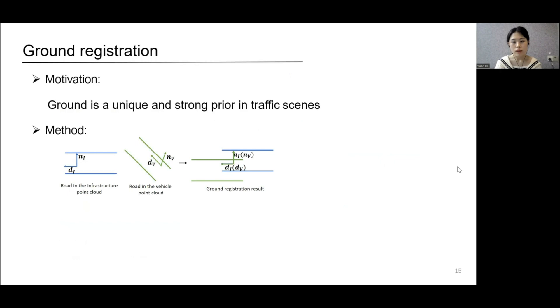Ground is a unique and strong prior in traffic scenes. By exploiting the ground, we can obtain an estimation of the rotation matrix between the vehicle infrastructure point cloud pairs. Specifically, we use ground-related semantic objects, such as curbs and road, to estimate the normal vector and the direction vector of the road.